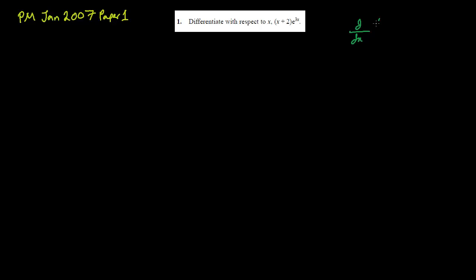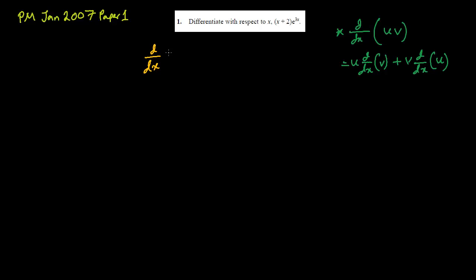The first question requires us to differentiate — this is the product rule. Remember, the product rule is when you differentiate d/dx of two variables multiplied together. That means d/dx of the expression, which is (x + 2)e^(3x).